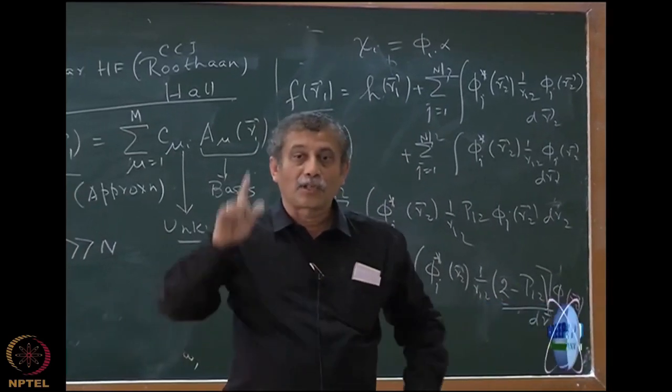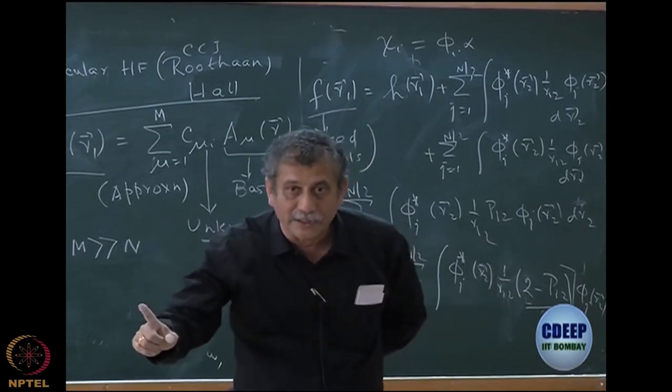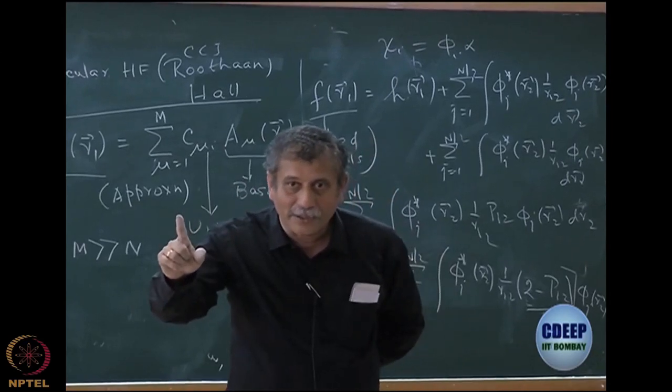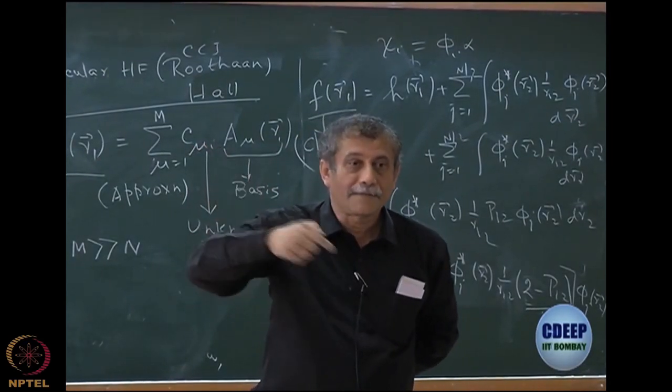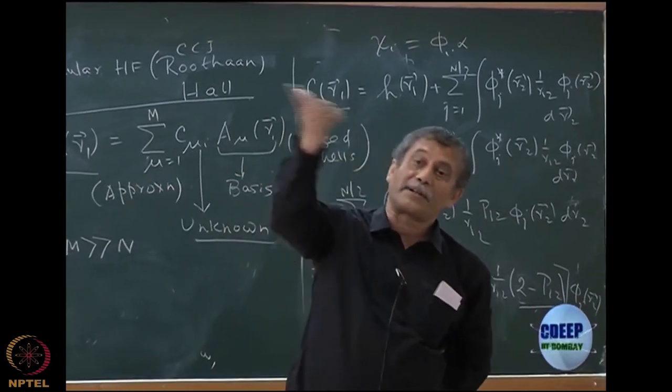They cannot be orthogonal. Why? Because oxygen atomic orbitals, I always ask this question, they are eigenfunctions of oxygen Hamiltonian. Hydrogen atom orbitals are hydrogen Hamiltonian. So they cannot be orthonormal to each other. Eigenfunctions of the same operator are orthogonal to each other, orthonormal to each other, but not different operators.